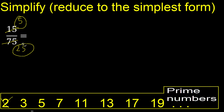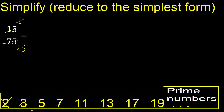25 cannot be divided by 3, but divided by 5: 25 divided by 5 is 5, and 5 divided by 5 is 1.